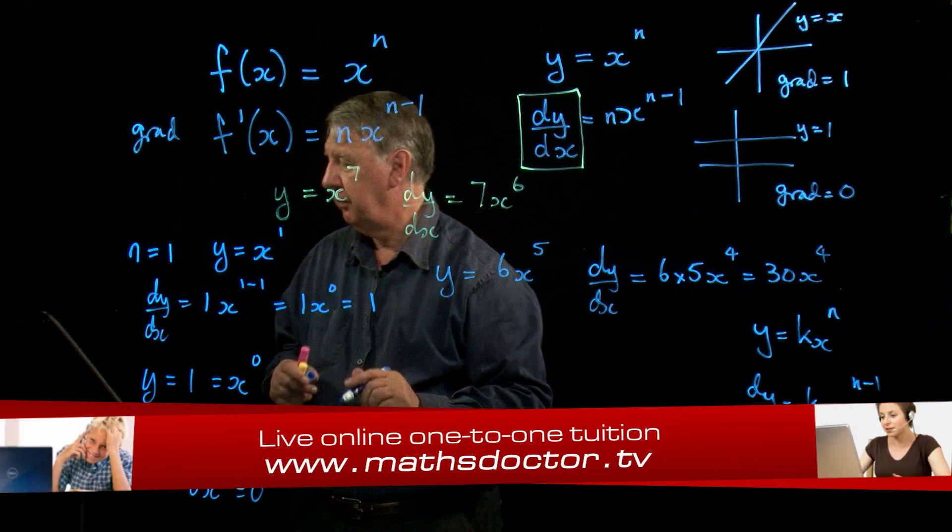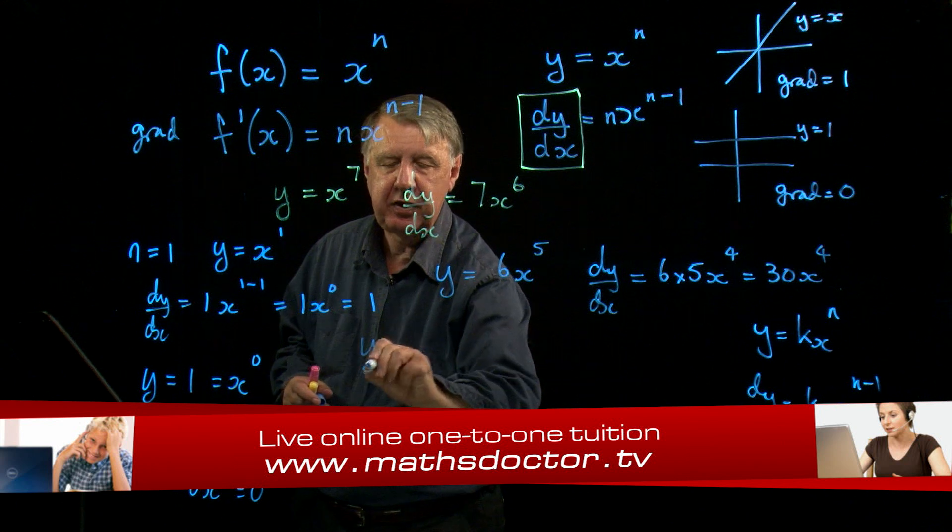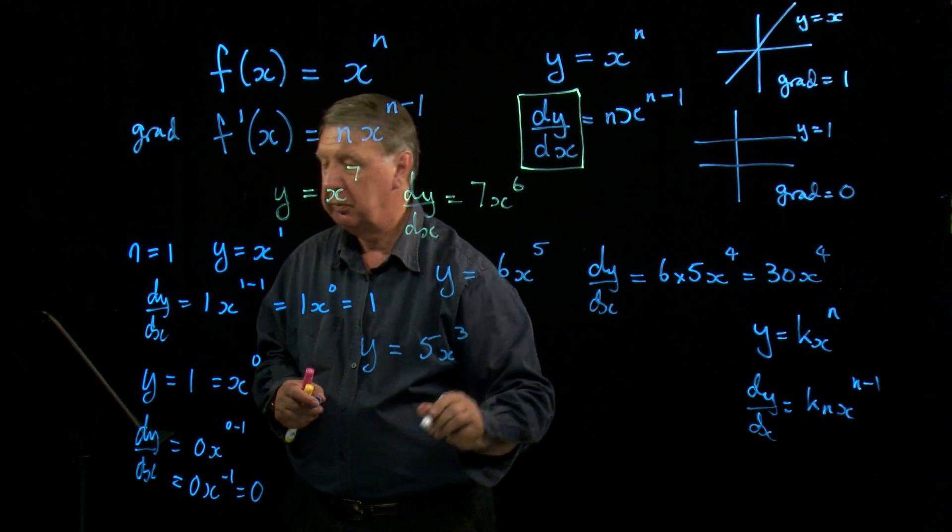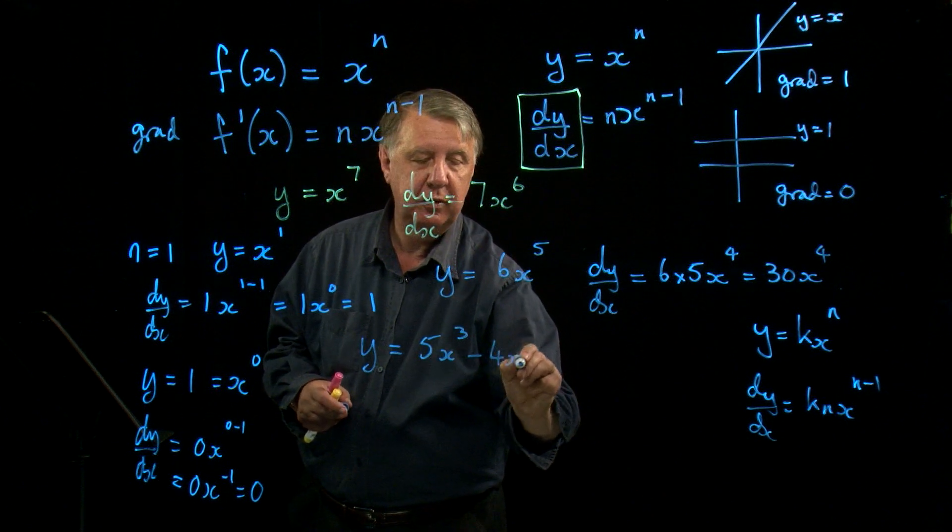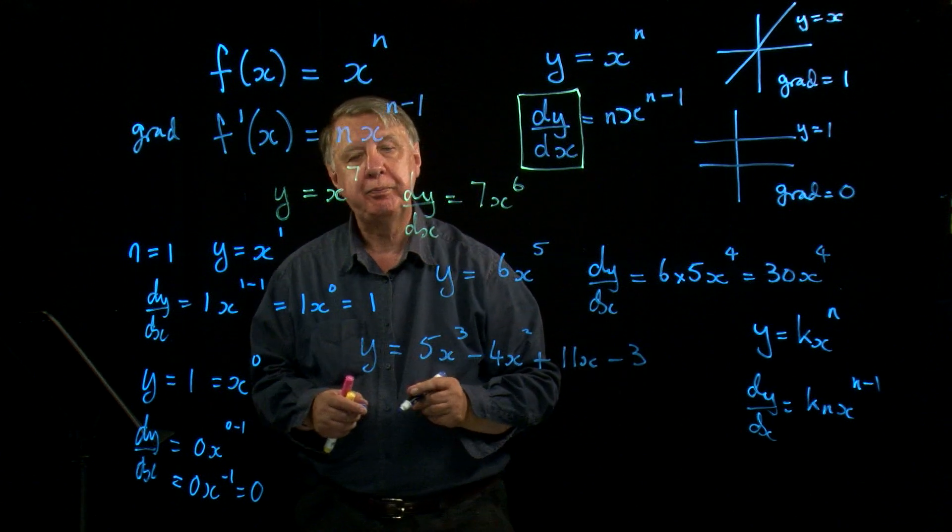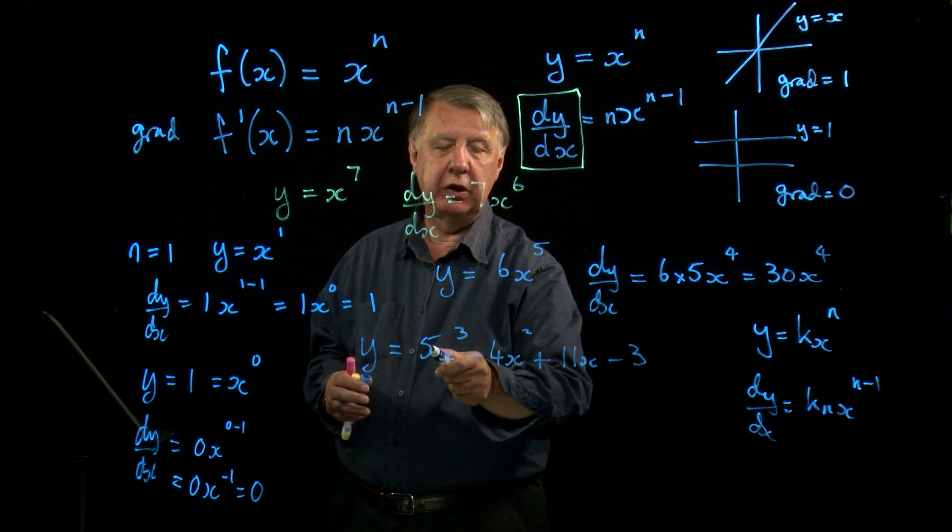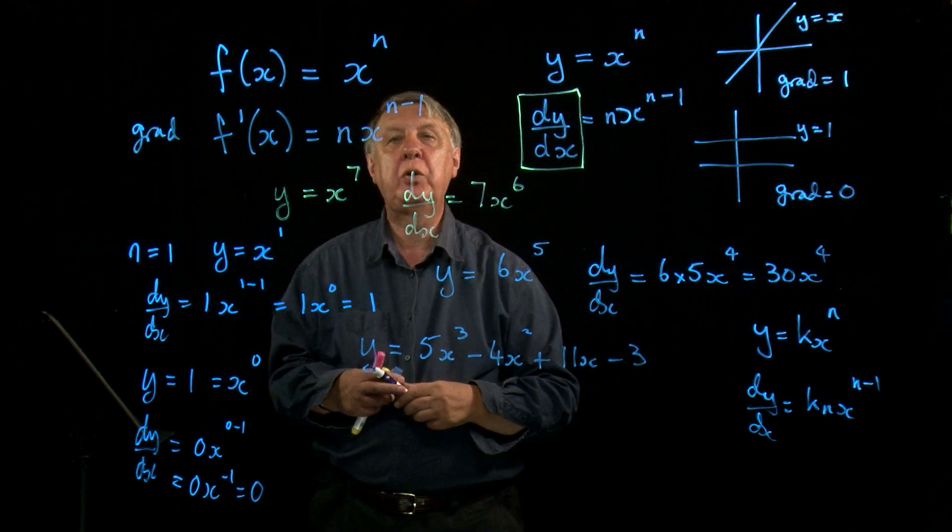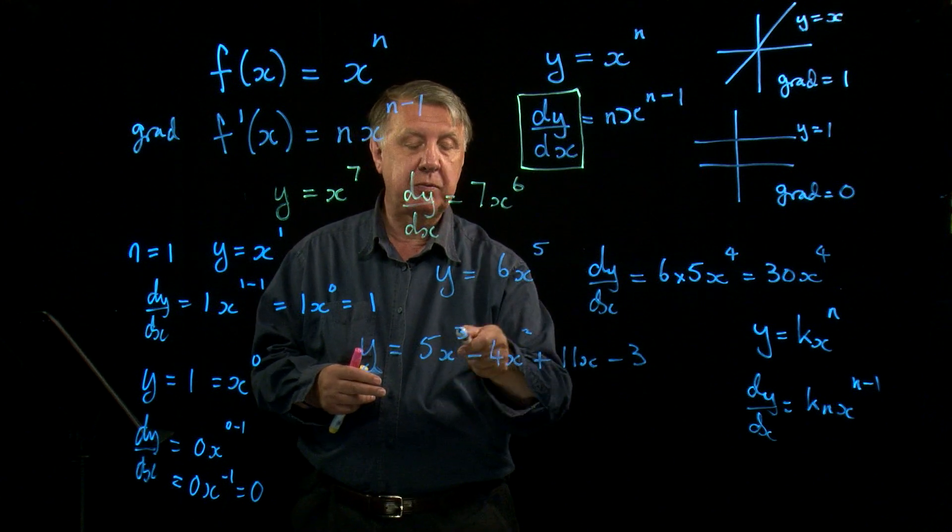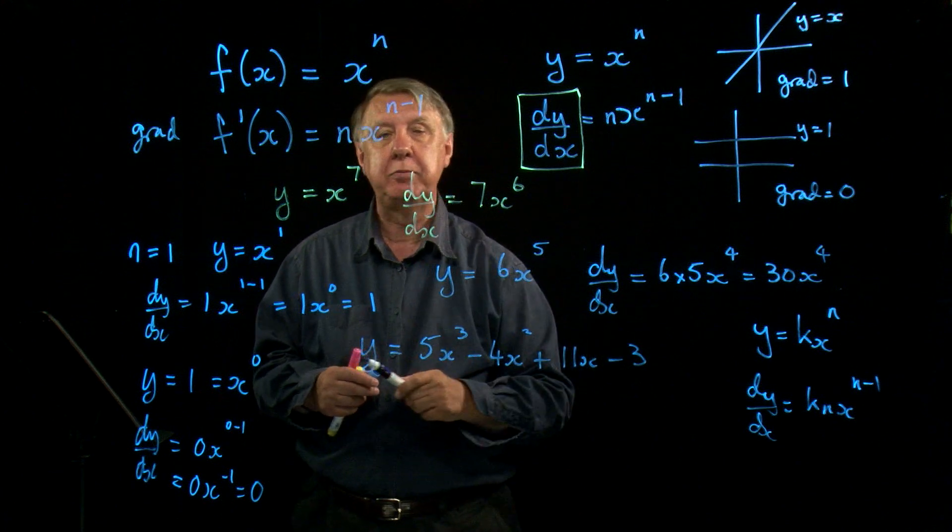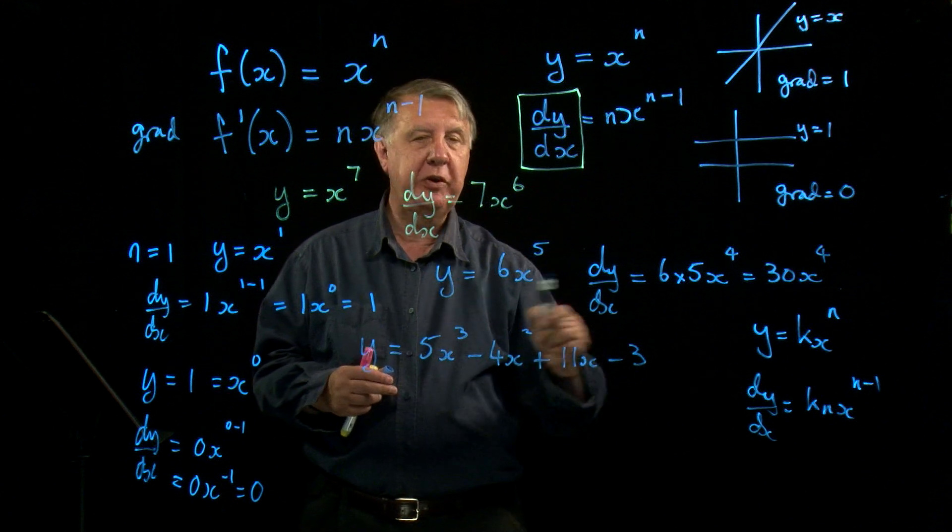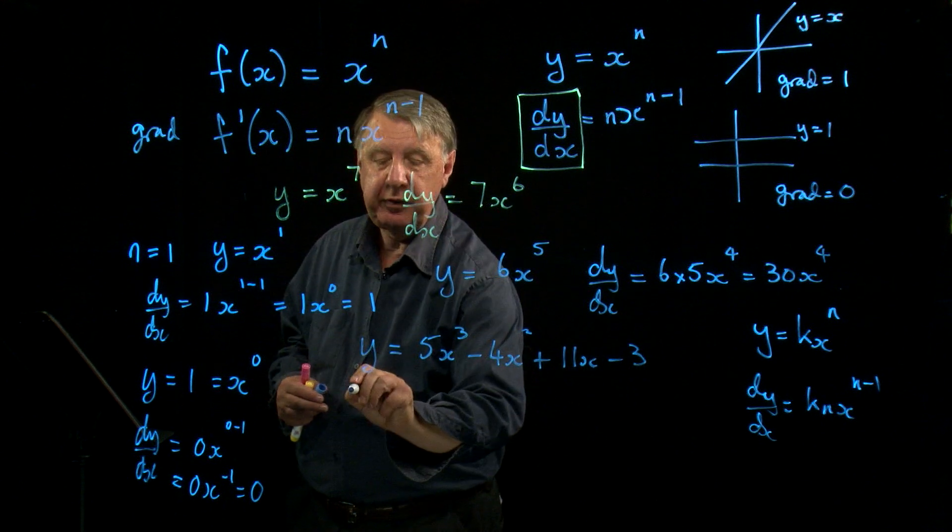All right, let's put all of that together and differentiate y equals 5x cubed minus 4x squared plus 11x minus 3, which is a cubic polynomial to give it its full title. A polynomial is sums of, or differences of, different powers of x. So now I'm going to extend my method to a polynomial.